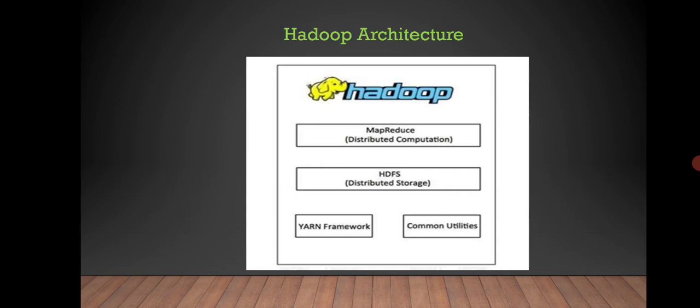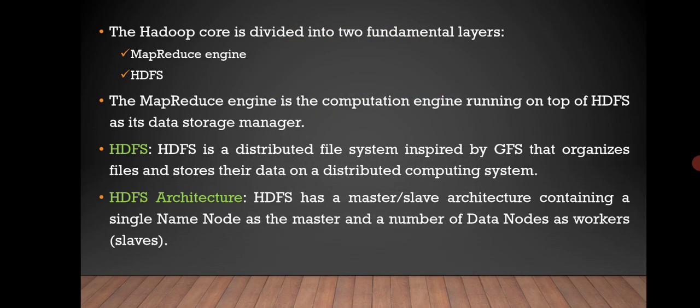So this is the Hadoop architecture. In Hadoop architecture, we have MapReduce for distributed computations and HDFS for distributed storage, and the YARN framework and common utilities. Hadoop core is divided into two fundamental layers: the MapReduce engine and HDFS. The MapReduce engine is a computation engine running on top of HDFS as its data storage manager.